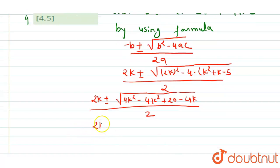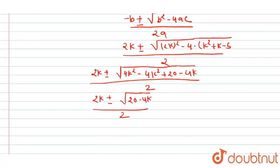We get 2k plus minus square root of 20 minus 4k over 2. Now we will take 4 common. We will get k plus minus square root of 5 minus k.